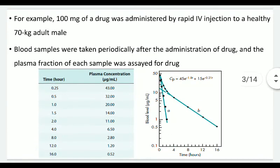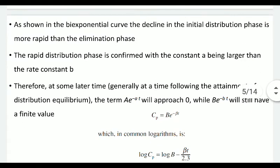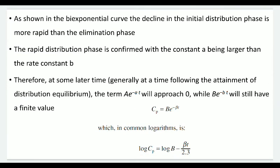When we back-extrapolate the curve line, we obtain intercepts referred to as capital A and capital B. As shown in the bi-exponential curve, the decline in the initial distribution phase is more rapid than the elimination phase. This steep decline occurs because the drug is being transferred to the tissue compartment (peripheral compartment) from the plasma compartment (central compartment). The rapid distribution phase is confirmed by the rate constant A being larger than rate constant B.